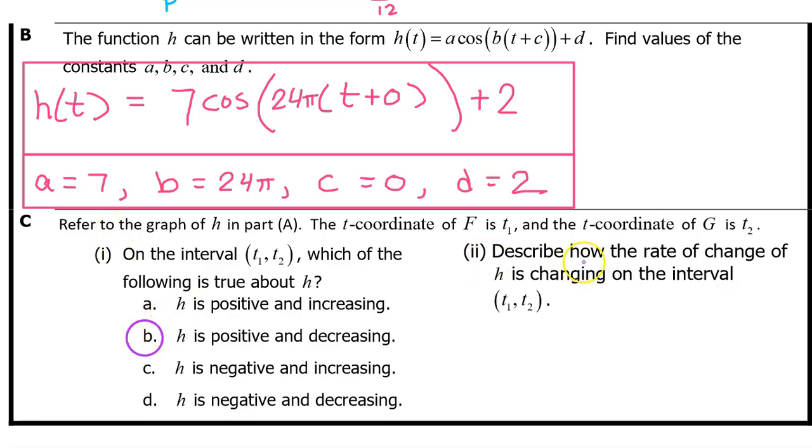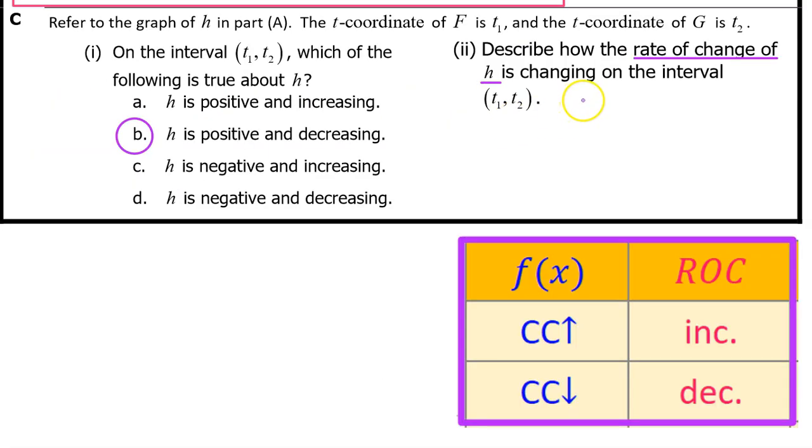See part 2. Describe how the rate of change of h is changing on the interval from t1 to t2. Notice that this time we are talking about the rate of change of h, not h itself. We have learned that wherever h is concave up, the rate of change of h is increasing. And wherever h is concave down, the rate of change of h is decreasing.